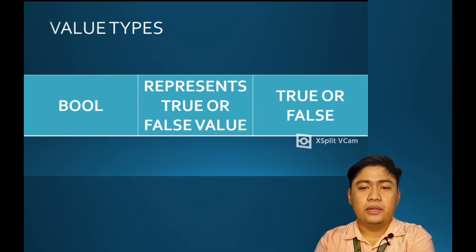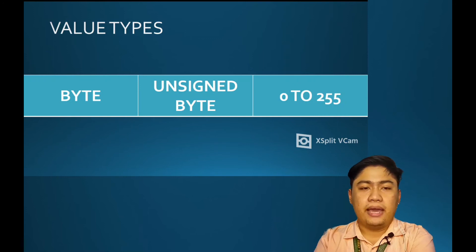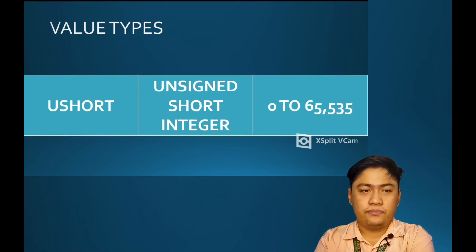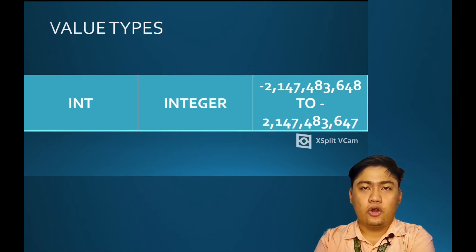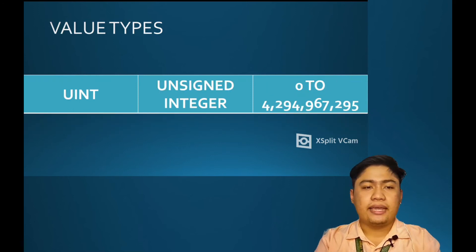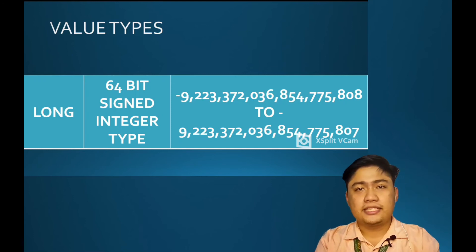The data types in C-Sharp include bool (boolean), sbyte (signed byte), byte (unsigned byte), short (short integer), ushort (unsigned short integer), int (integer), uint (unsigned integer), and long, which is a 64-bit signed integer type.